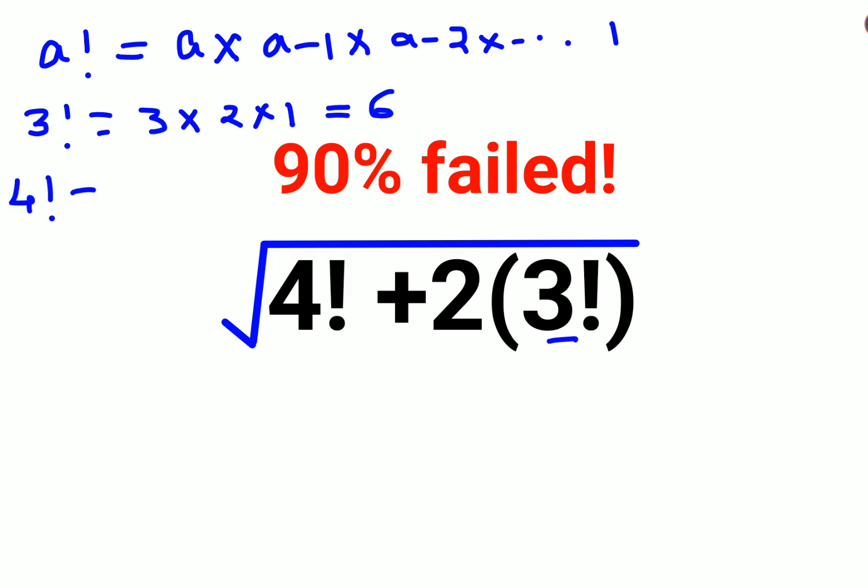Similarly, what would be 4 factorial? 4 factorial is 4 into 3 into 2 into 1, and we know this is 6. So 4, you just have to multiply 4 into 6. That value is 24.